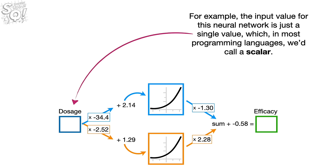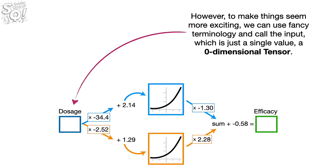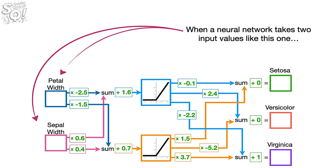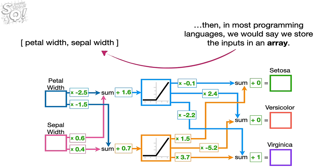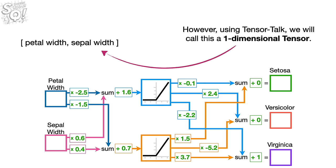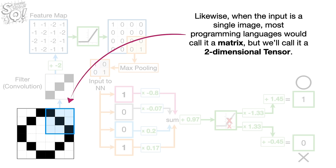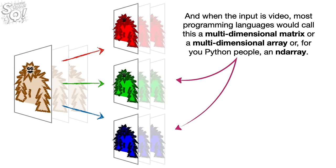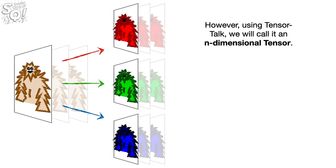For example, the input value for this neural network is just a single value, which, in most programming languages, we'd call a scalar. However, to make things seem more exciting, we can use fancy terminology and call the input, which is just a single value, a zero-dimensional tensor. When a neural network takes two input values like this one, then, in most programming languages, we would say we store the inputs in an array. However, using TensorTalk, we will call this a one-dimensional tensor. Likewise, when the input is a single image, most programming languages would call it a matrix, but we'll call it a two-dimensional tensor. And when the input is video, most programming languages would call this a multi-dimensional matrix, or a multi-dimensional array, or, for you Python people, an nd array. However, using TensorTalk, we will call it an nd-dimensional tensor.